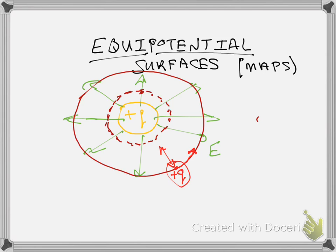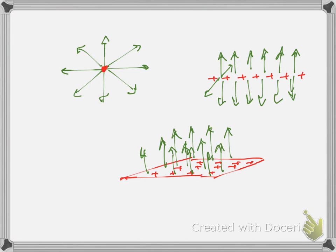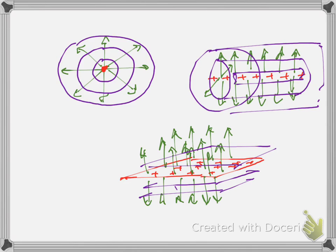What do equipotential surfaces look like for symmetric charge configurations? For a point charge, the field is spherically outward — so equipotentials are spheres. For a line of charge, the field is cylindrically outward — so equipotentials are cylinders. For a plane of charge or in a constant field, the field is straight — so equipotentials are planes perpendicular to the field.